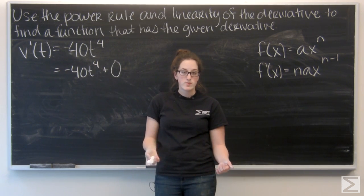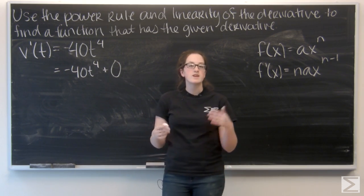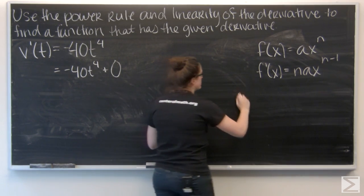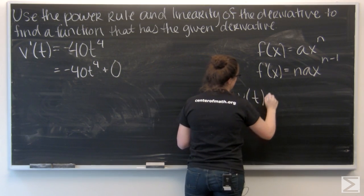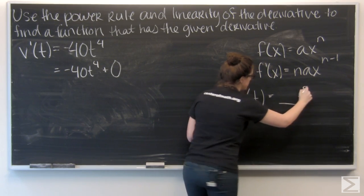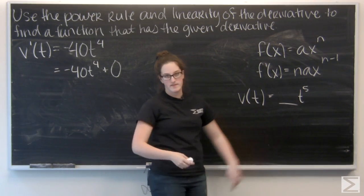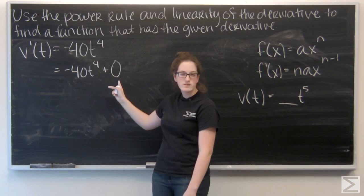So if my exponent in v prime is 4, I'm going to have v of t equals some constant times t to the fifth. And then I want to deal with this zero.